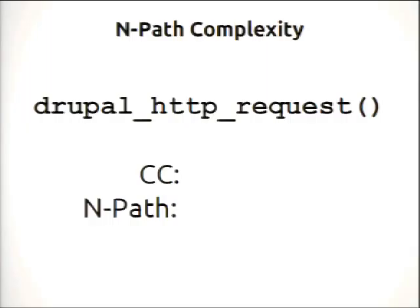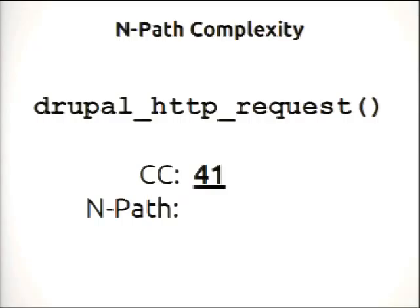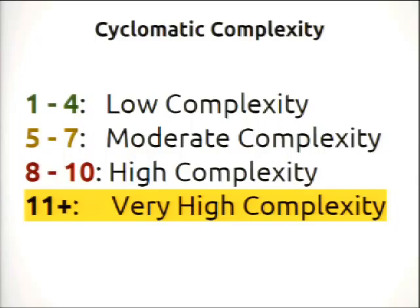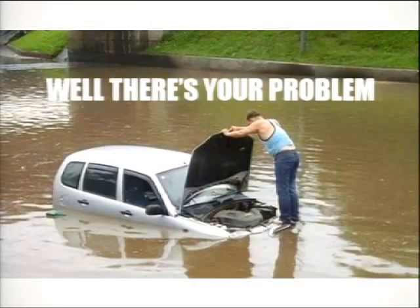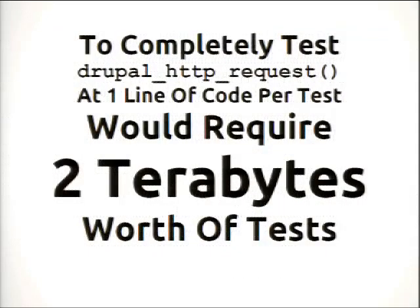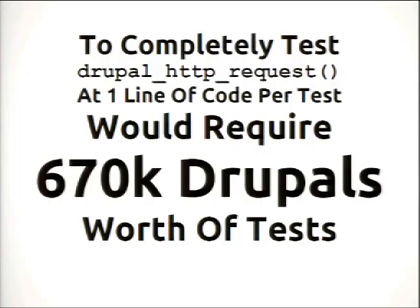Now let's look at a different function, also from Drupal 7 core. Cyclomatic complexity of 41 — there are 41 decision points in this function. This is why I love n-path complexity: it requires 25 billion tests to completely test that one function. To put that in context, if we assume a test is one line of code, it would take two terabytes worth of tests — that's 412 DVDs or 670,000 Drupal installations. We might want to do something about that function. Thank God it's gone.